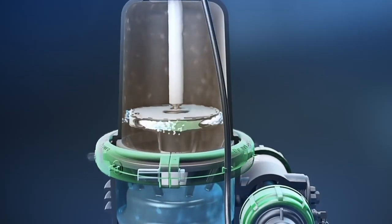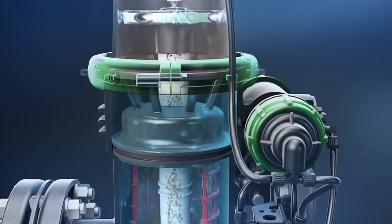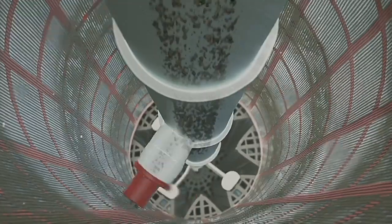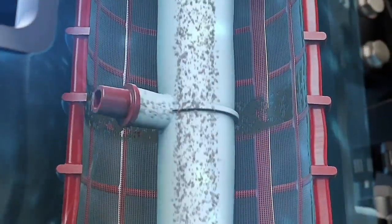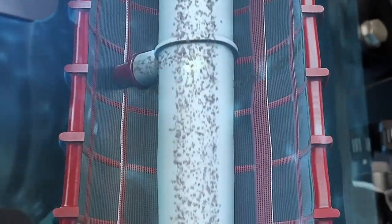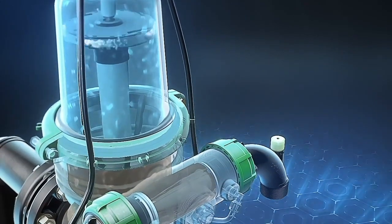suction force from the scanner's nozzle effectively removes the dirt particles from the screens. Once the dirt is removed, the pressure differential returns to normal and the filter resumes its standard filtering mode, ready for the next flushing cycle.